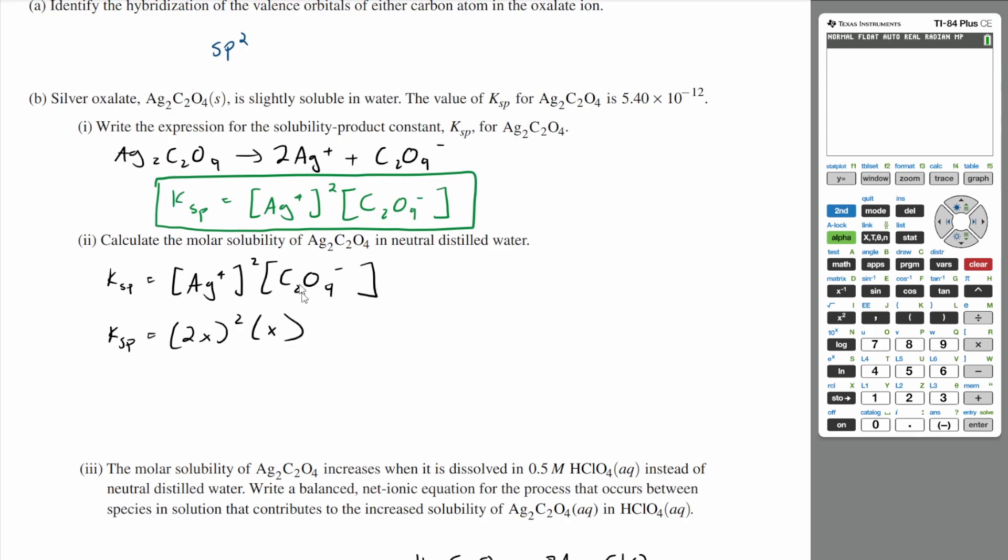For every one molecule of oxalate that dissociates, you're going to have two molecules of silver ion that dissociate. And you know your KSP. Your KSP is 5.40 times 10 to the negative 12th.